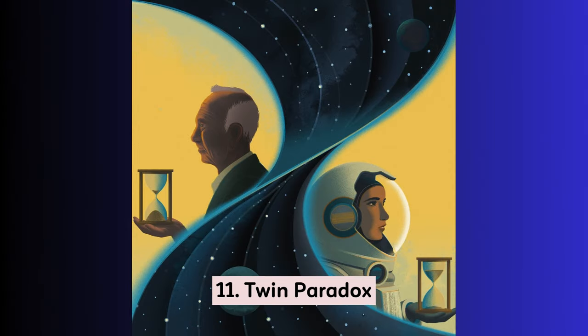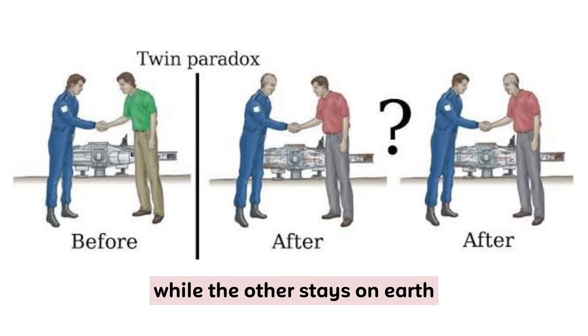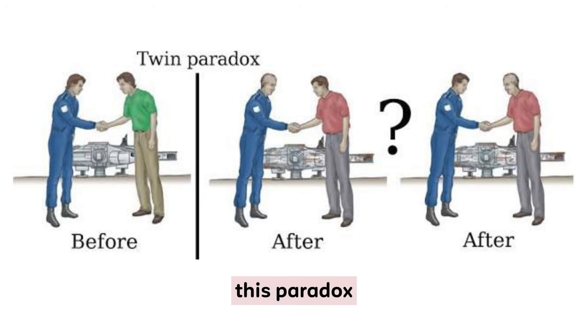11. Twin Paradox. One twin travels through space at near-light speed while the other stays on Earth. When the traveling twin returns, they've aged less. How can time dilation occur? This paradox challenges our understanding of time and relativity.